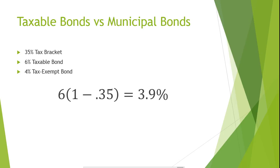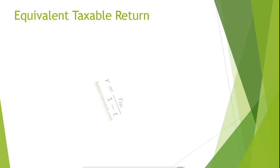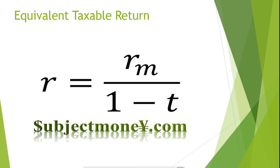Another way to compare taxable bonds with non-taxable bonds is to find the equivalent taxable return. We let R represent the before-tax return offered by the taxable bond, T represent the combined federal and local taxes, and RM represent the return offered on the tax-exempt municipal bond. To find the equivalent taxable return, our formula is R equals RM over 1 minus T — simply the taxable yield divided by 1 minus T.